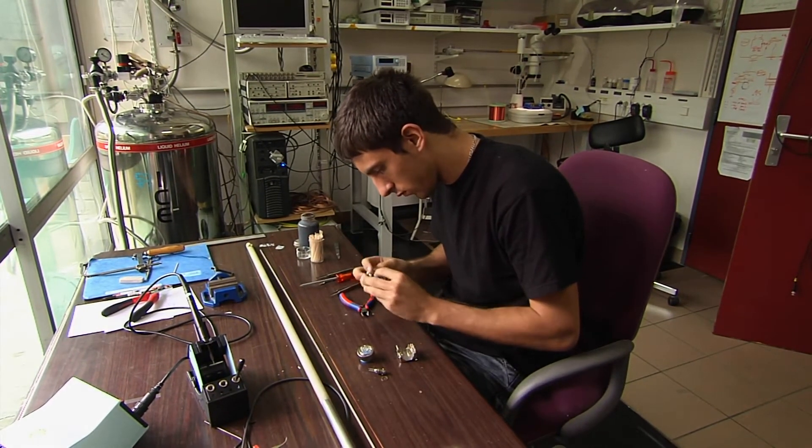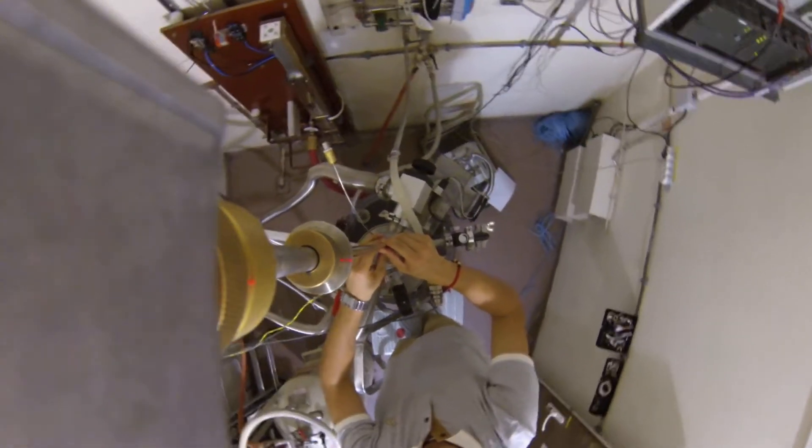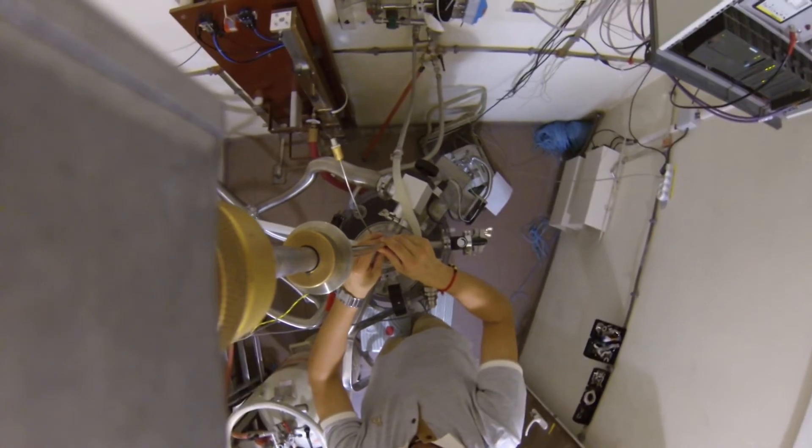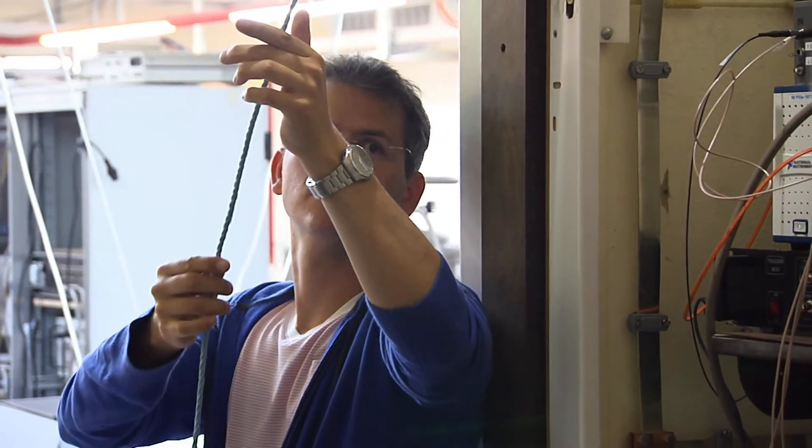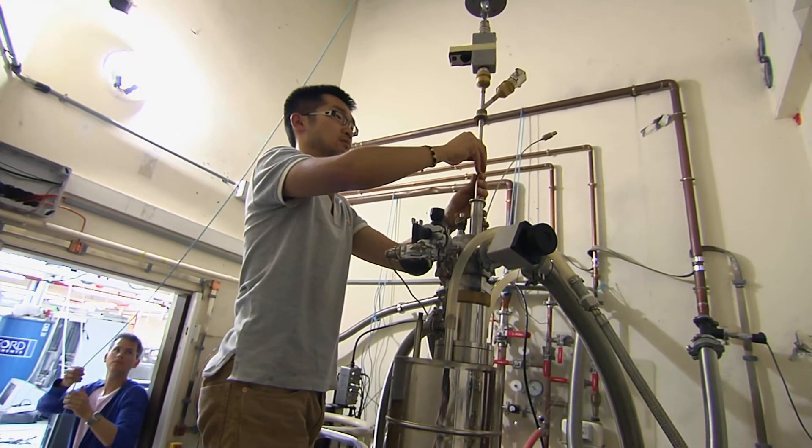And then the probe goes into the cryostat. The cryostat is placed in the magnet and then the sample is really placed in the center of the magnetic field and it's cold due to the surrounding of liquid helium.